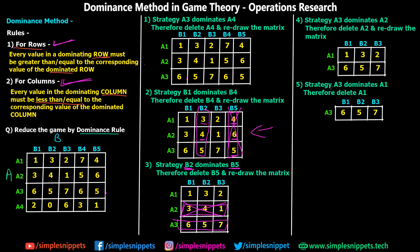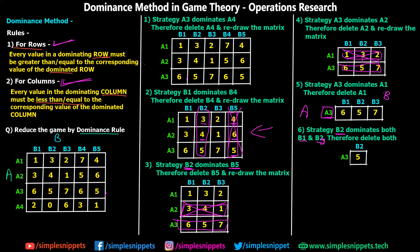Moving on to step number five, A3 also dominates A1. All the values in A3 are greater than A1: 6 > 1, 5 > 3, and 7 > 2. So we completely exclude A1. We are now left with only one strategy for player A — that is A3 — and three strategies for player B: B1, B2, and B3.